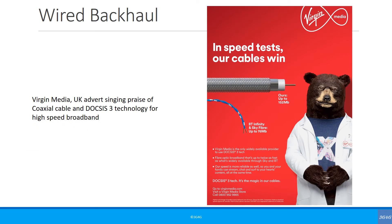Virgin Media in the UK has rolled out DOCSIS 3 on their cable network, and with DOCSIS 3 copper cable you can get up to 152 Mbps connectivity, which is quite good. However, this may work with small cells in 4G, but when we move to 5G we will probably require fibre for much higher data rate support.